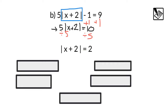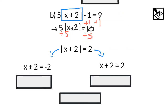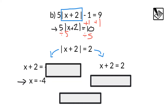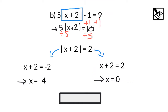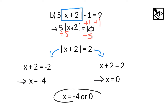Now that the absolute value is isolated, just like before, we can split this off into two separate equations: x plus 2 equals negative 2, or x plus 2 equals positive 2. If we subtract 2 on both sides, we'll end up getting x equals negative 4 or x equals 0. Just like when we solve equations, we can test these by substituting them back into the original to make sure they work — always something to keep in mind if you're not sure you got the correct solution.